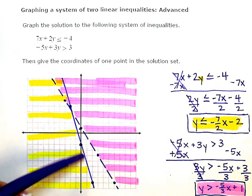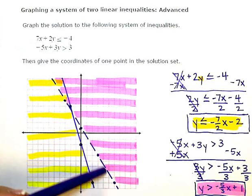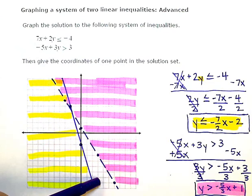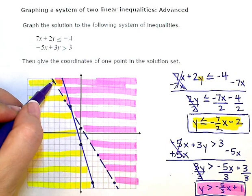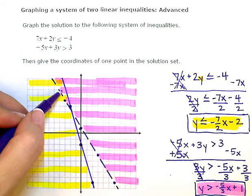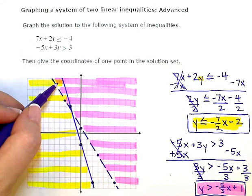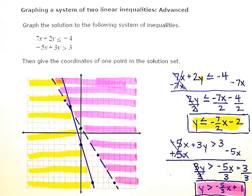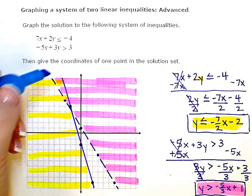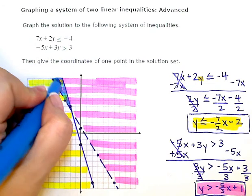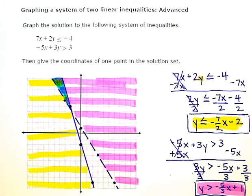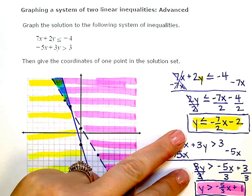This region down here has no stripes. So these points aren't solutions to either inequality. And then this tiny region up here, this tiny wedge right up here is the only area that had both pink and yellow stripes. So this region, I'm going to use a third color here just to kind of emphasize this. This little wedge or region right there is the solution to the entire system. Both inequalities together.